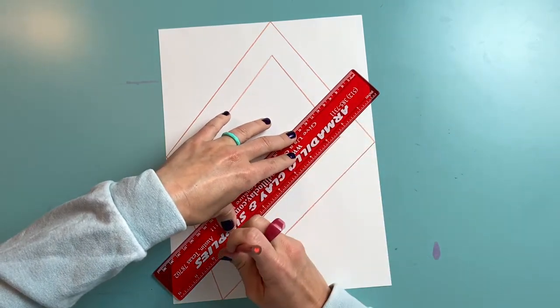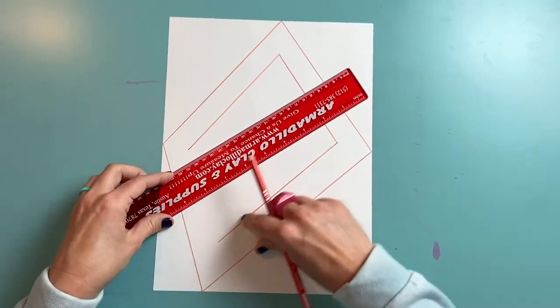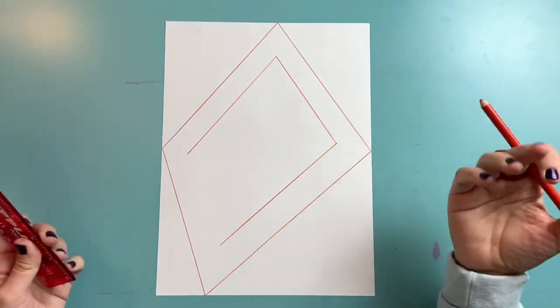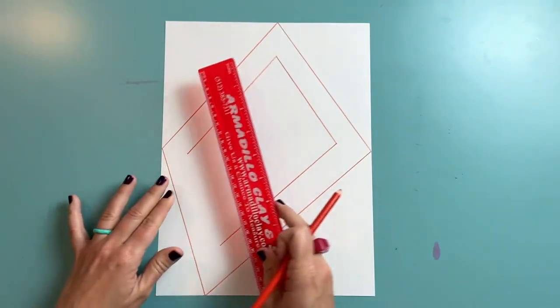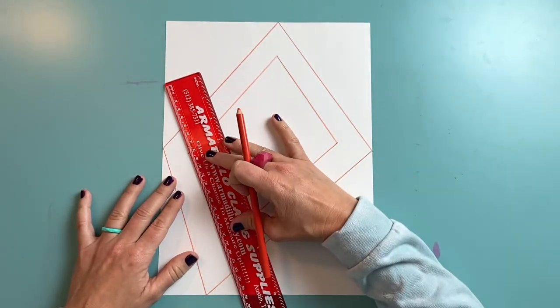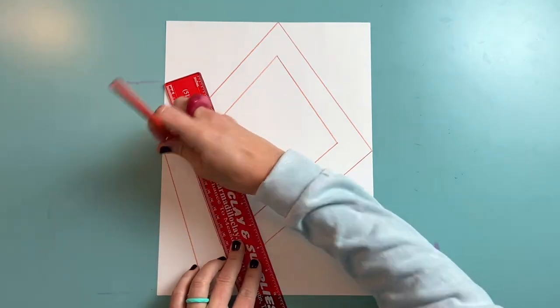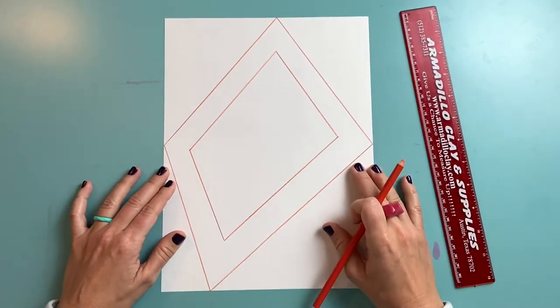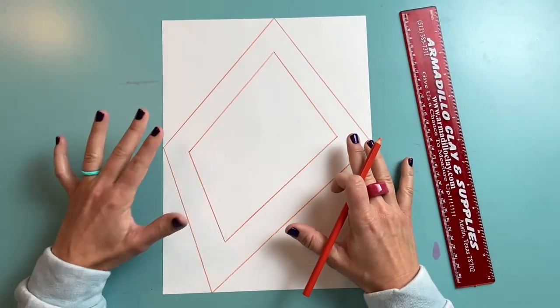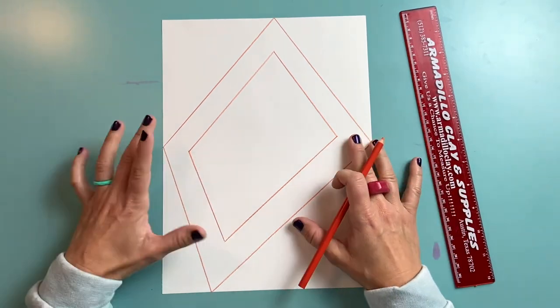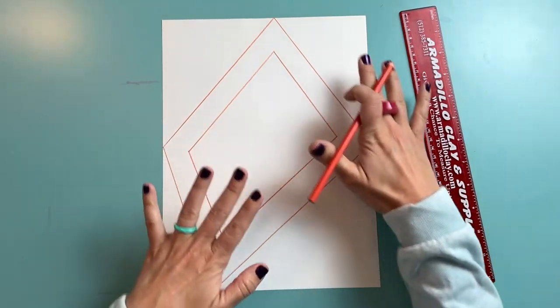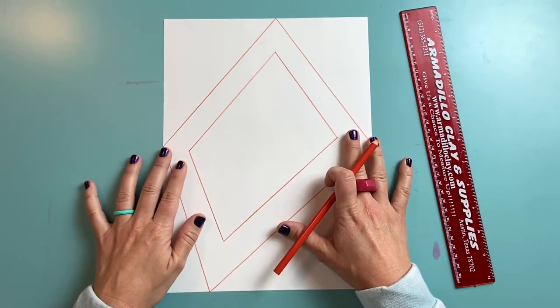Another line going this way, and it's okay if these lines aren't perfectly parallel to the other ones. That's fine. And there we go. So now we can start adding geometric and organic shapes and lines to our drawing in and around this main quadrilateral.